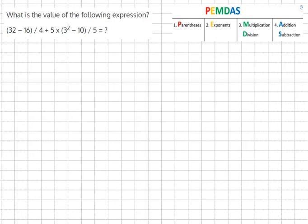What is the value of the following expression? 32 minus 16 over 4 plus 5 times 3 squared minus 10 over 5. So we're going to start off with the two parentheses.